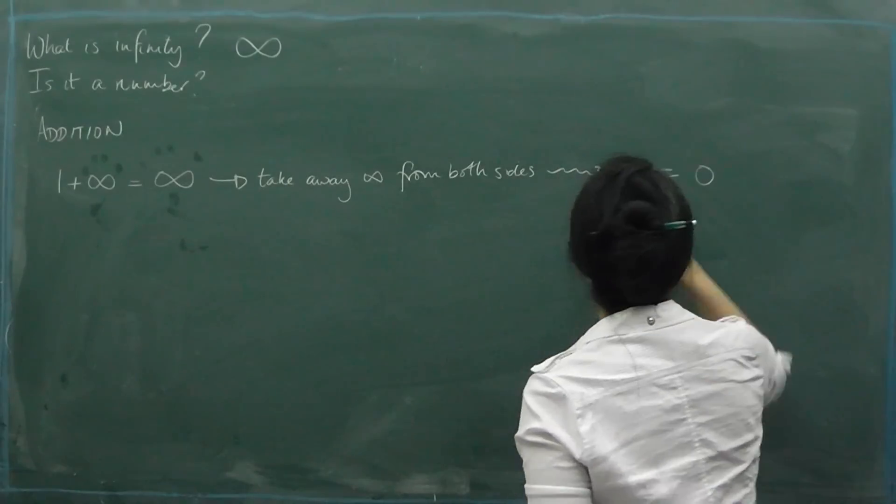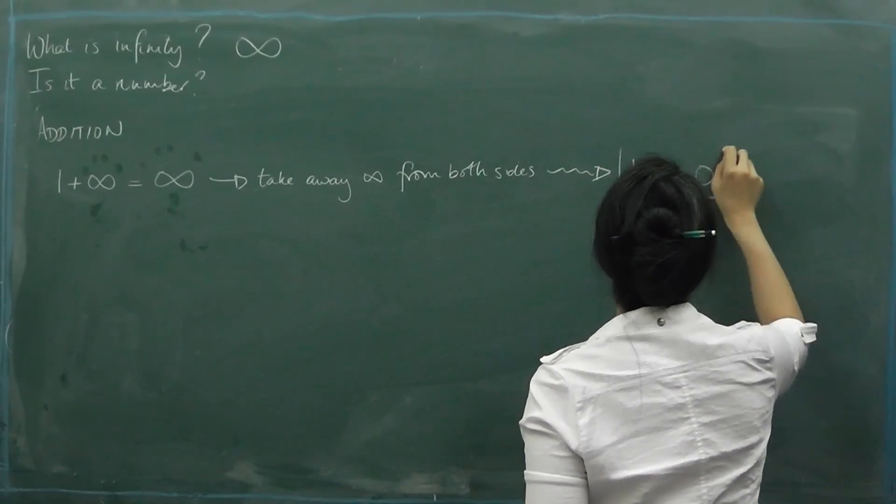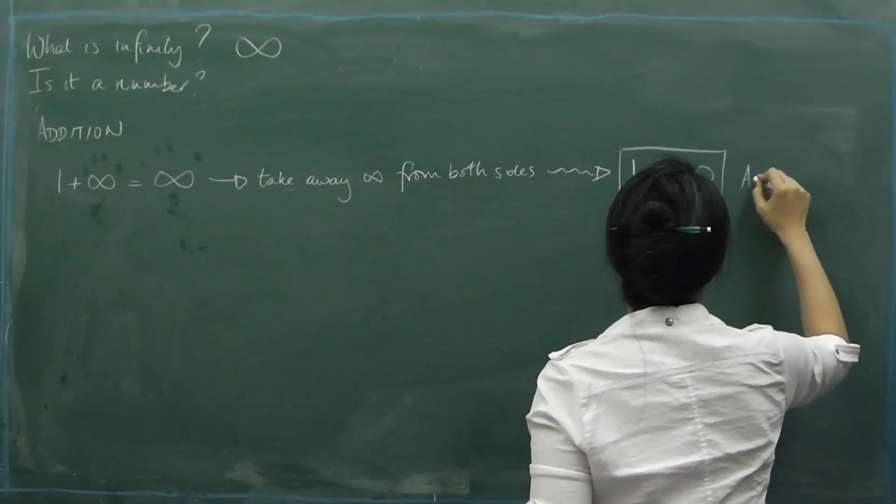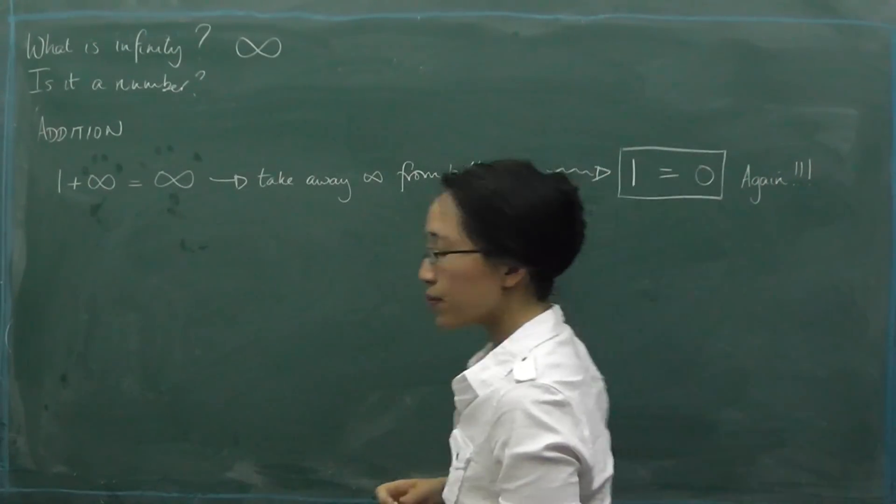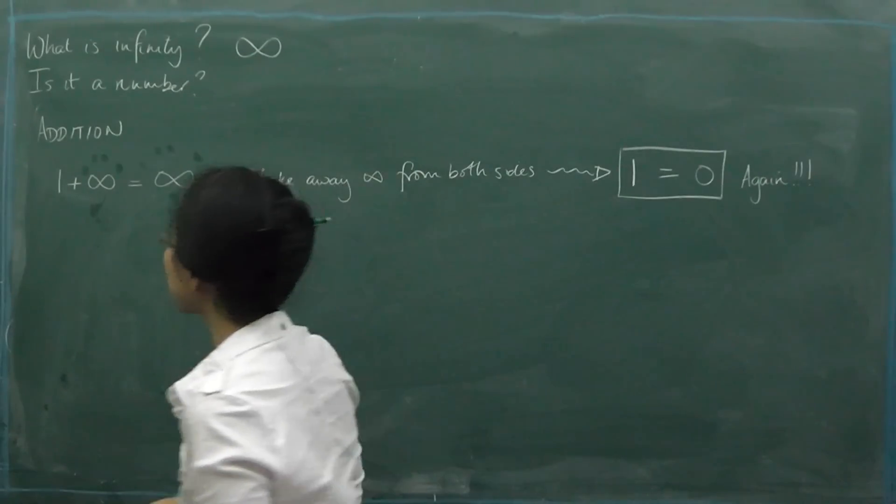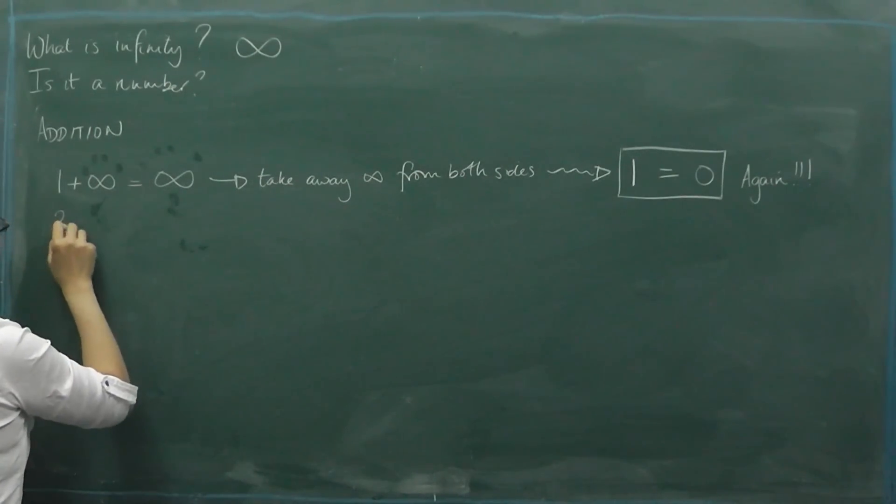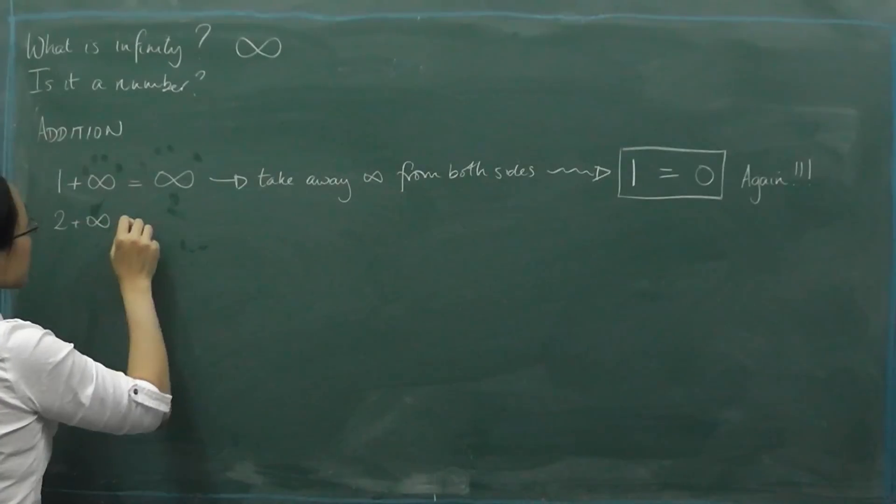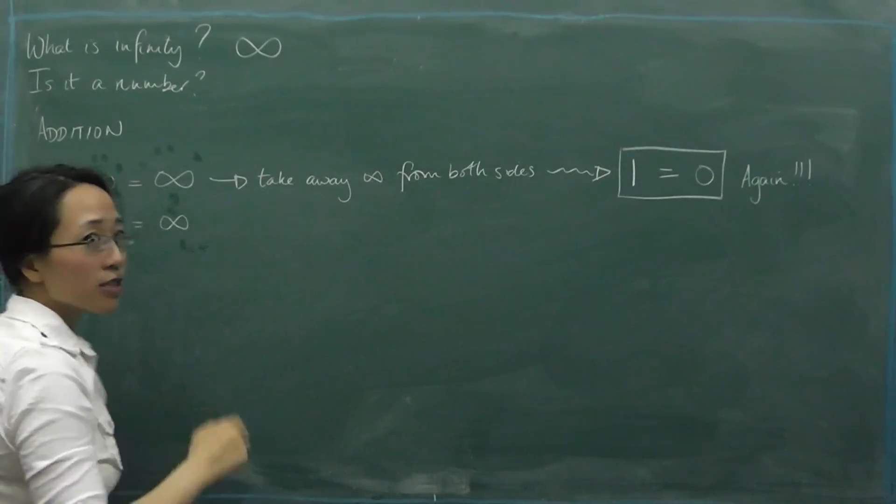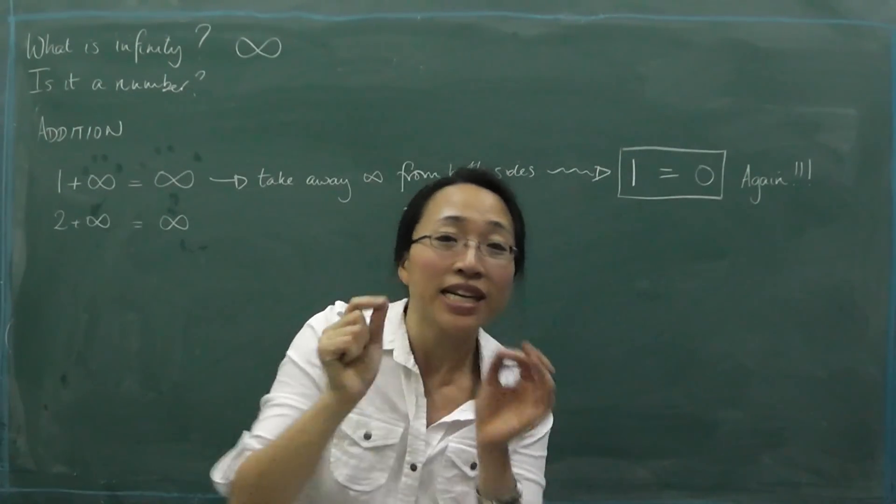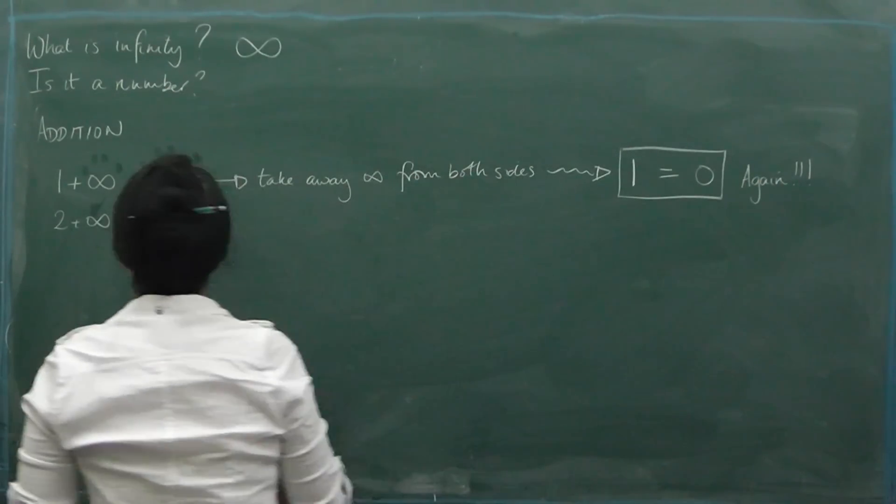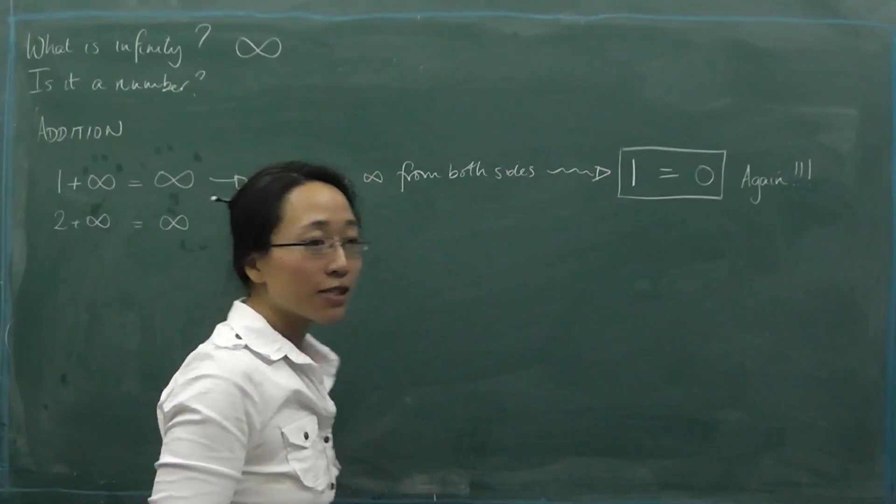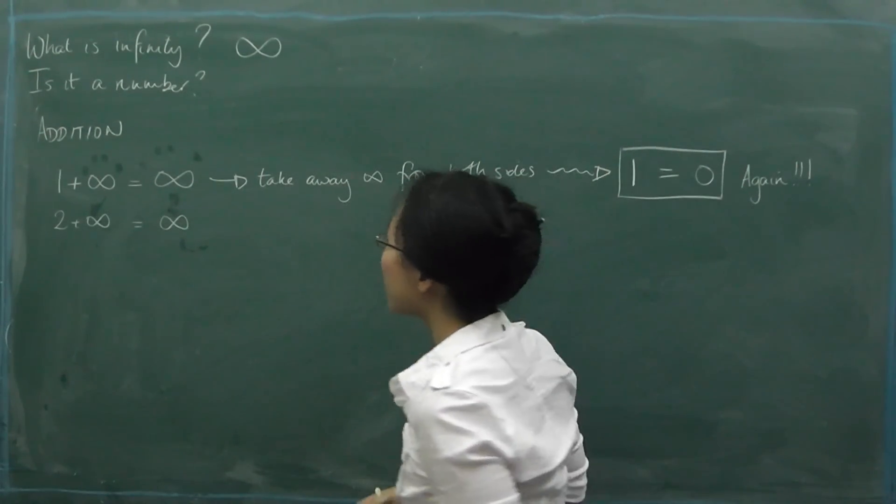Oh, look, we've got one equals zero again. And, of course, we can do that with two plus infinity. Because two plus infinity really ought to be infinity as well. I mean, two is weeny and infinity is enormous. And so two plus infinity shouldn't make any difference to be infinity. It's still just going to be infinity.